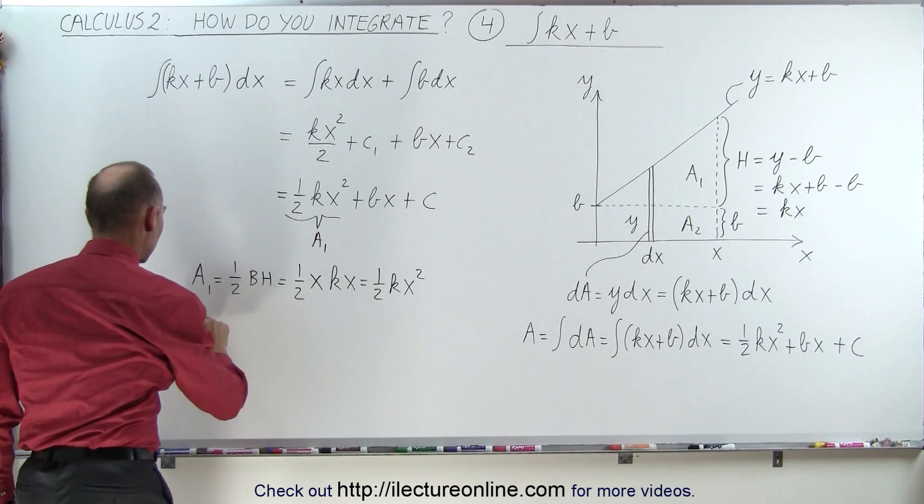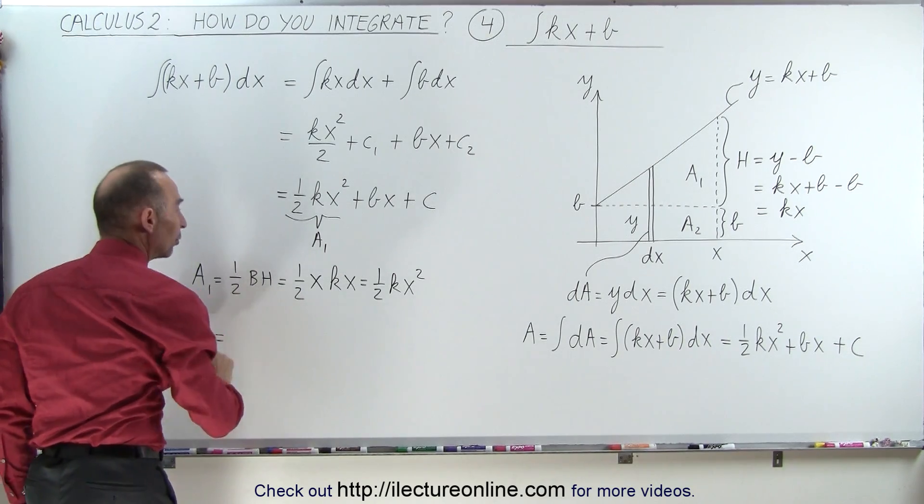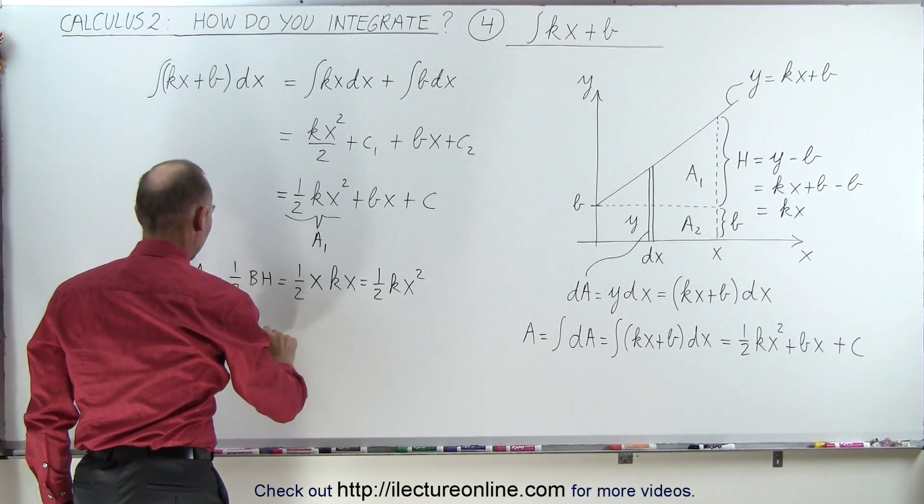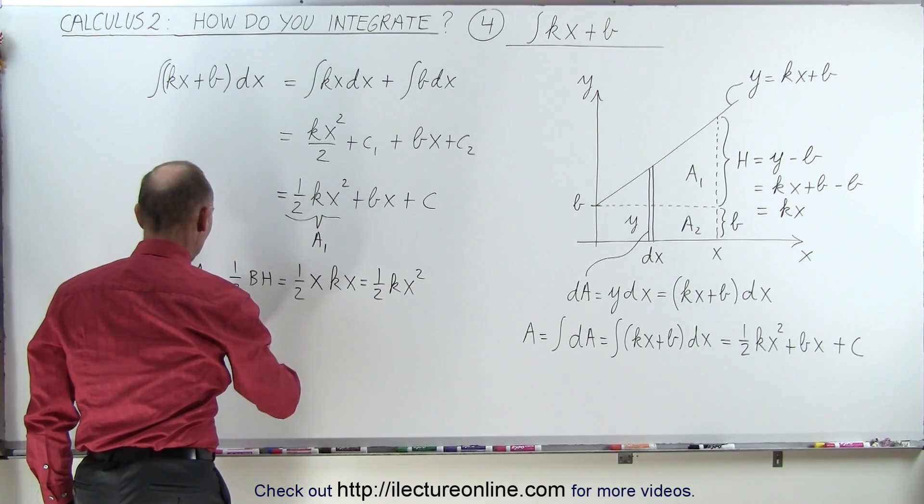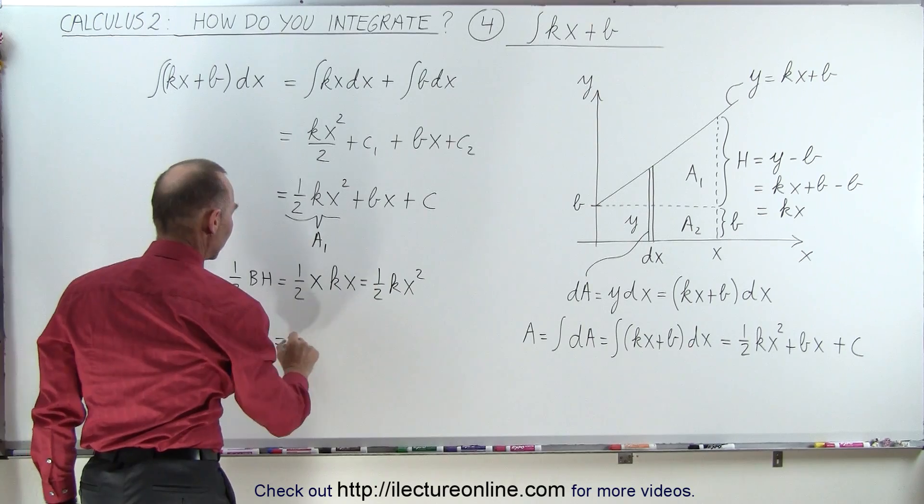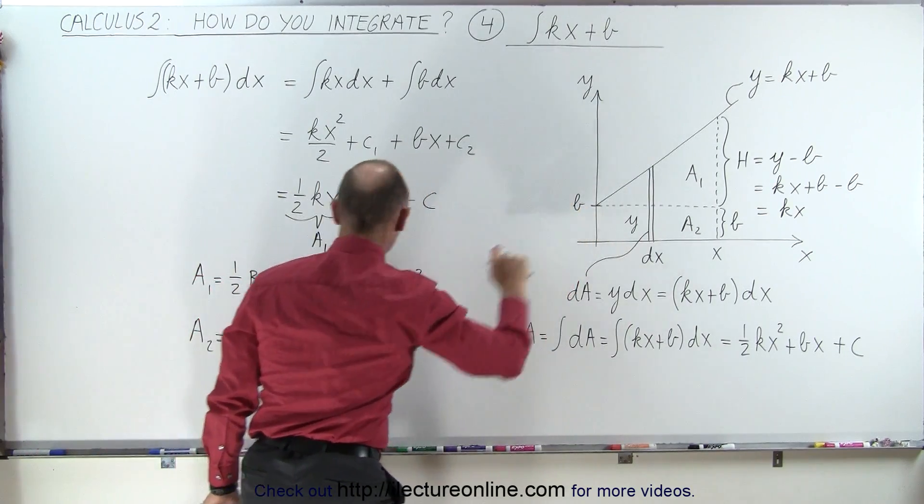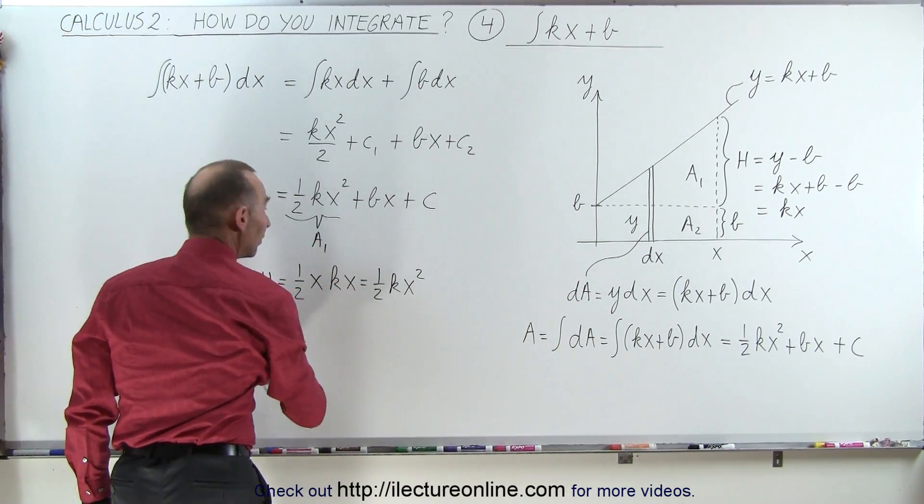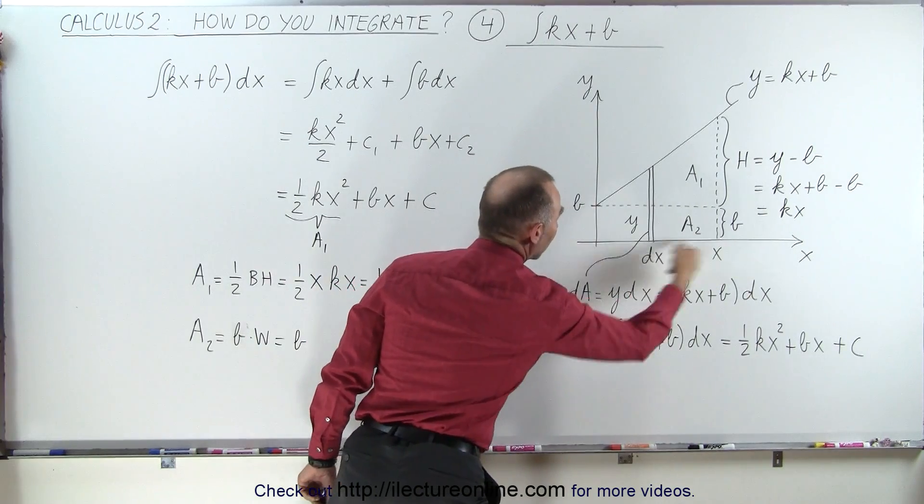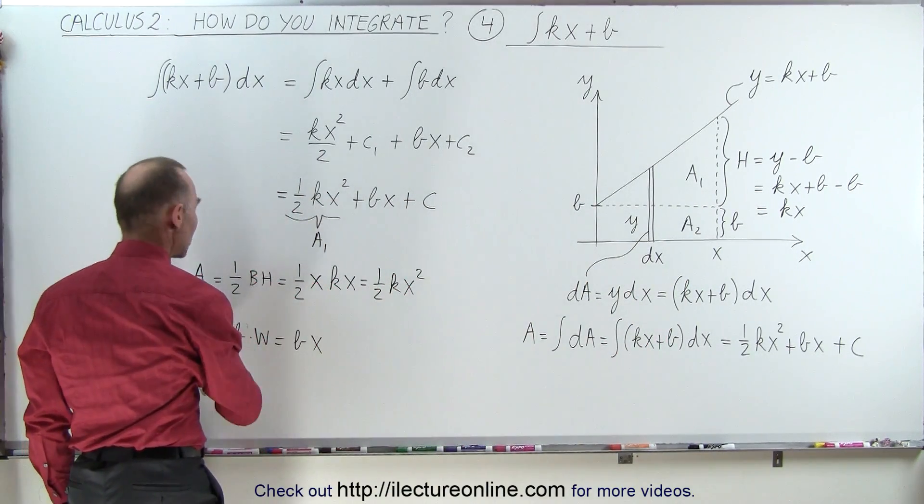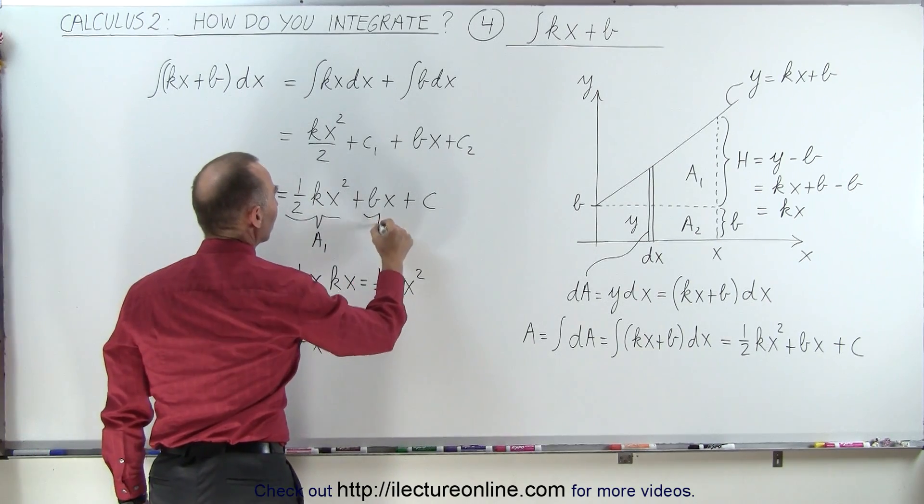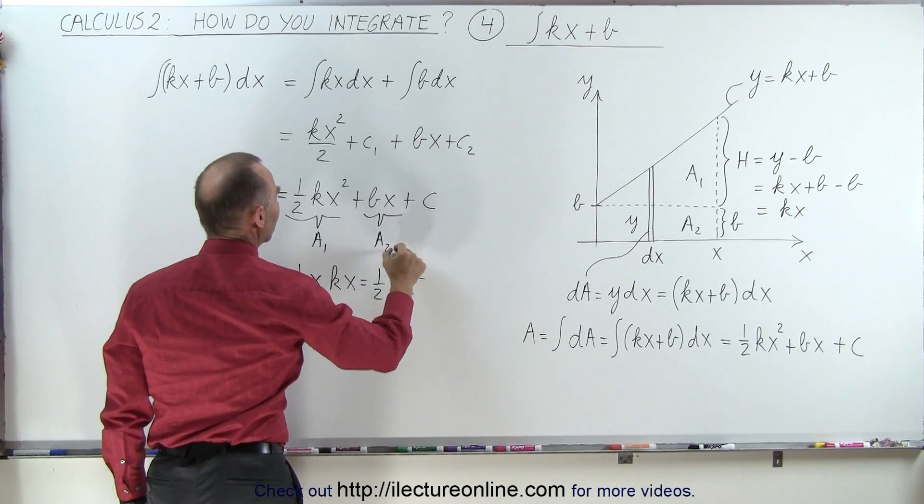Now when I look at area 2, that is equal to a rectangle, that's the height times the width. Let me use a different symbol for that, so b times width. The b is this b right there, that's the height, and the width w would be the length right here, that would be x. So bx here represents the area of the rectangle, which is this portion of the integral right here, a2.